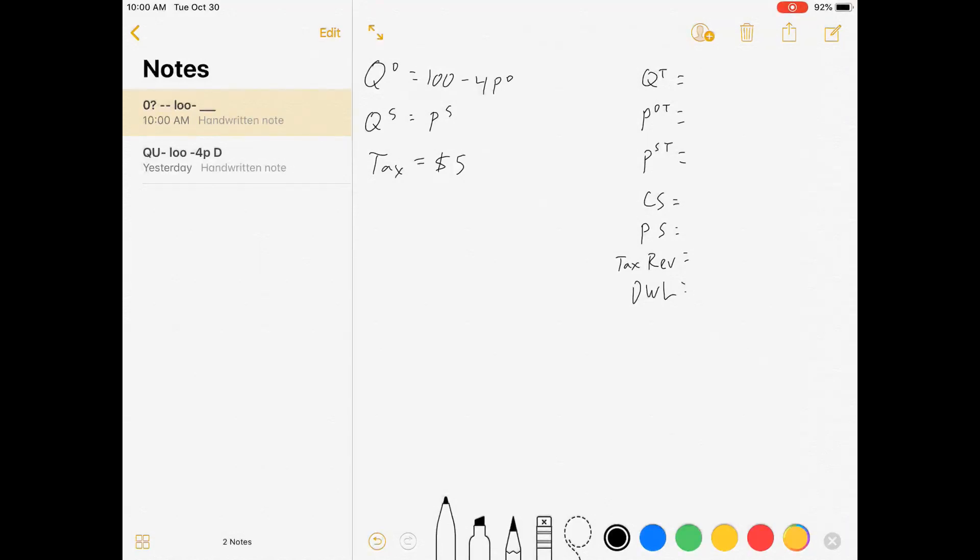Hi, welcome to my first of hopefully many videos to help you guys survive your economics course. This one is for an intermediate microeconomics course, no calculus. We're going to look at what happens in a competitive market when we throw in an excise tax, which is just a tax per unit of the good.